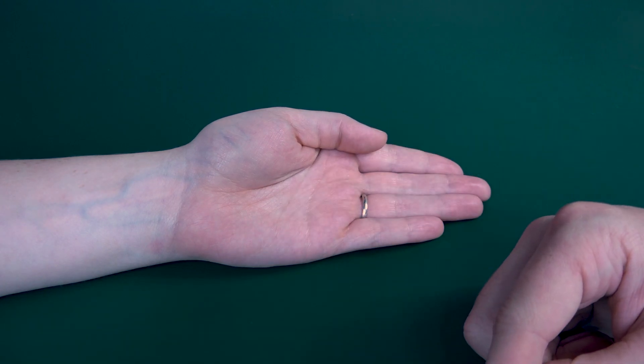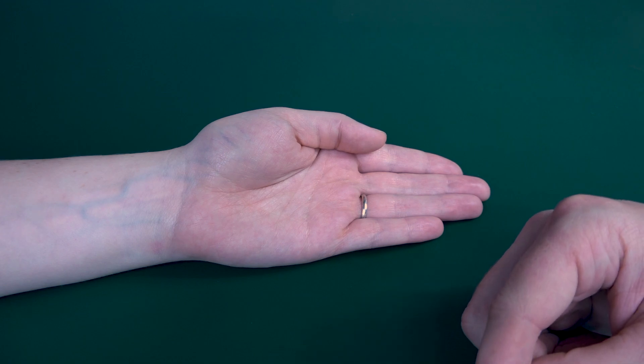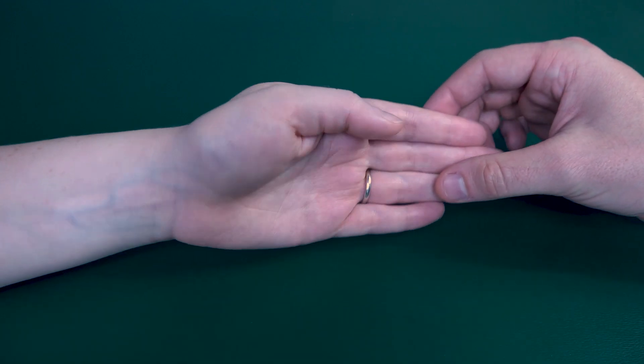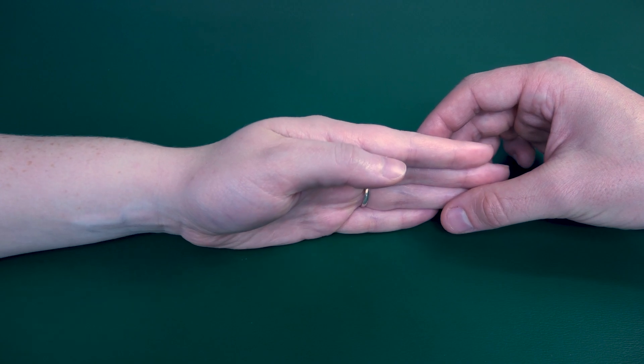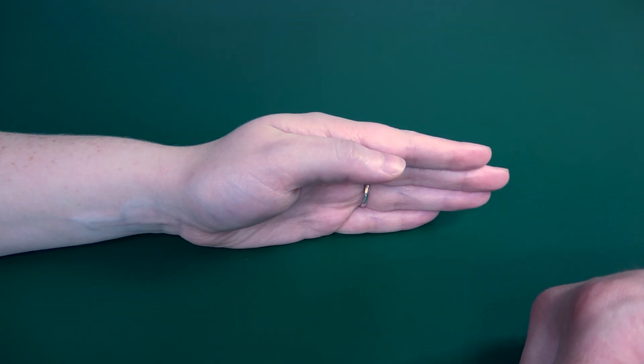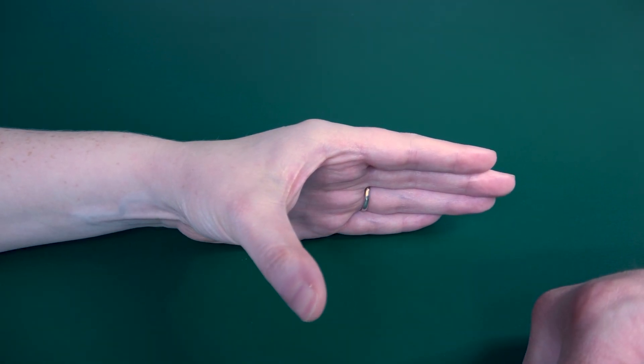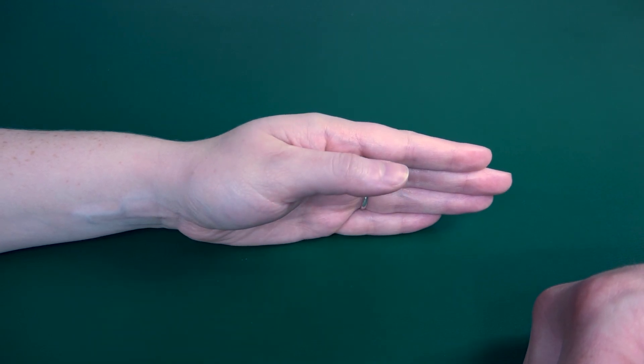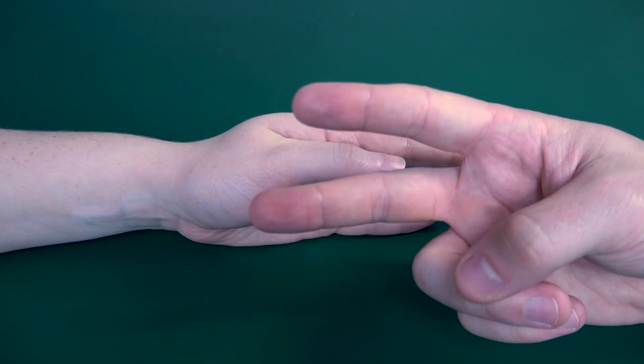...abduction, then I would have her in a gravity eliminated position. Looks like this shown here. Go ahead, perform thumb abduction for me Rachel. And then bring it back. Because she was able to perform this, I would count that as a grade two.